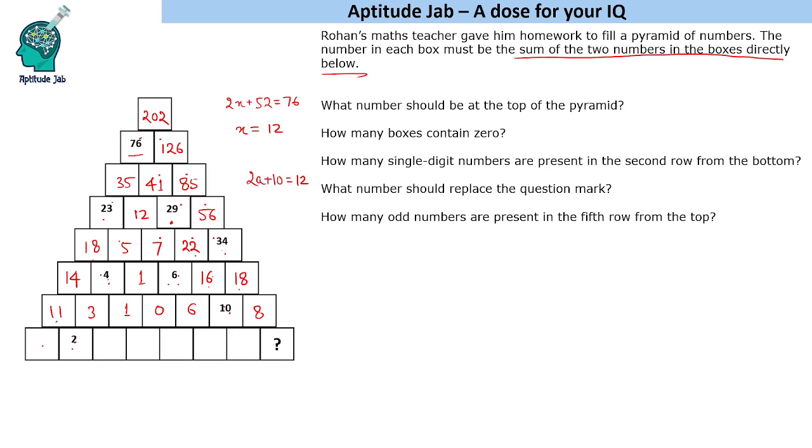Now this is 2. 2 plus 9 is 11. 2 plus 1 is 3. 1 plus 1 is 2. 1 plus 0 is 1. Again, we will have a 0 here. Then it should be 6, then 6 and 10 is 4, and this will be 4. So we have filled the complete grid. Now we can answer the questions easily.